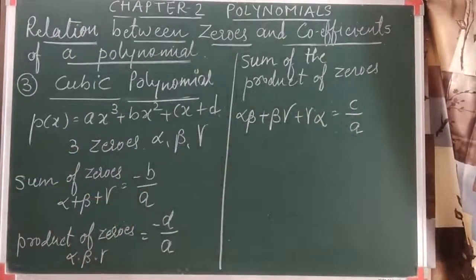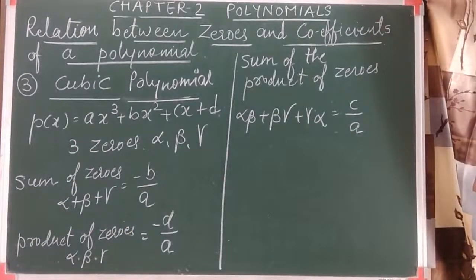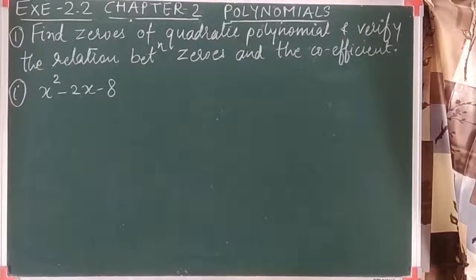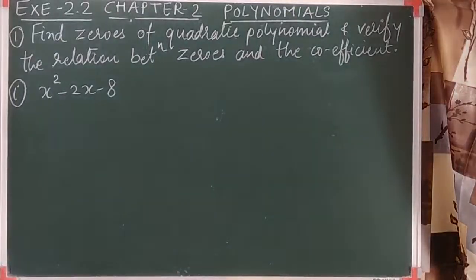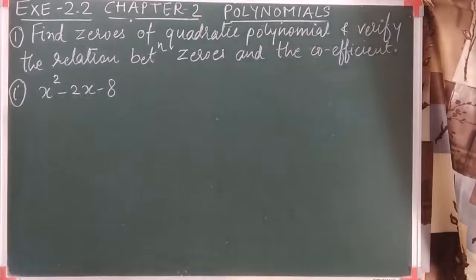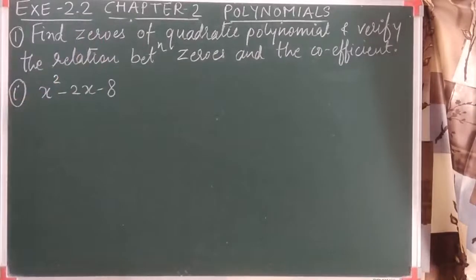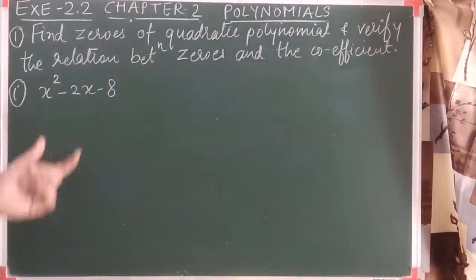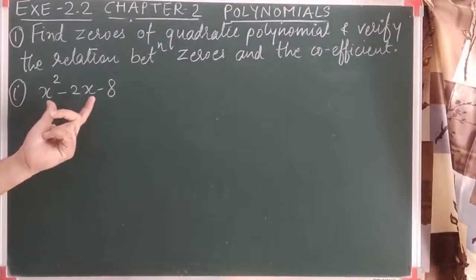Remember these three relations for objective type questions. Now let's look at the first portion of Exercise 2.2. We have to find out the zeros of the quadratic polynomial and verify the relation between the zeros and the coefficients. The method we use here is the same we will use in Chapter 4 on quadratic equations.